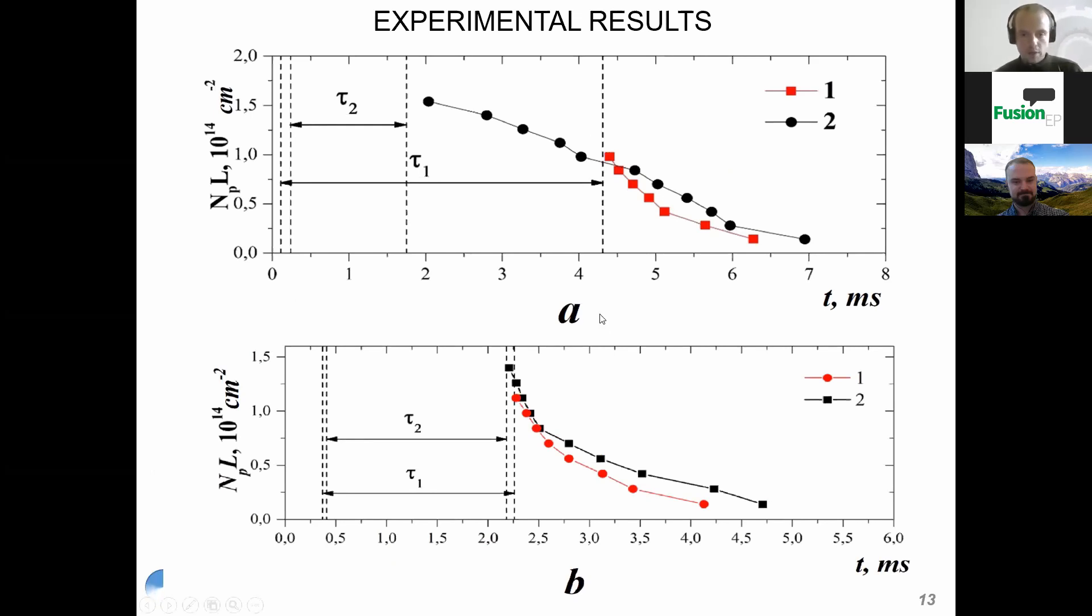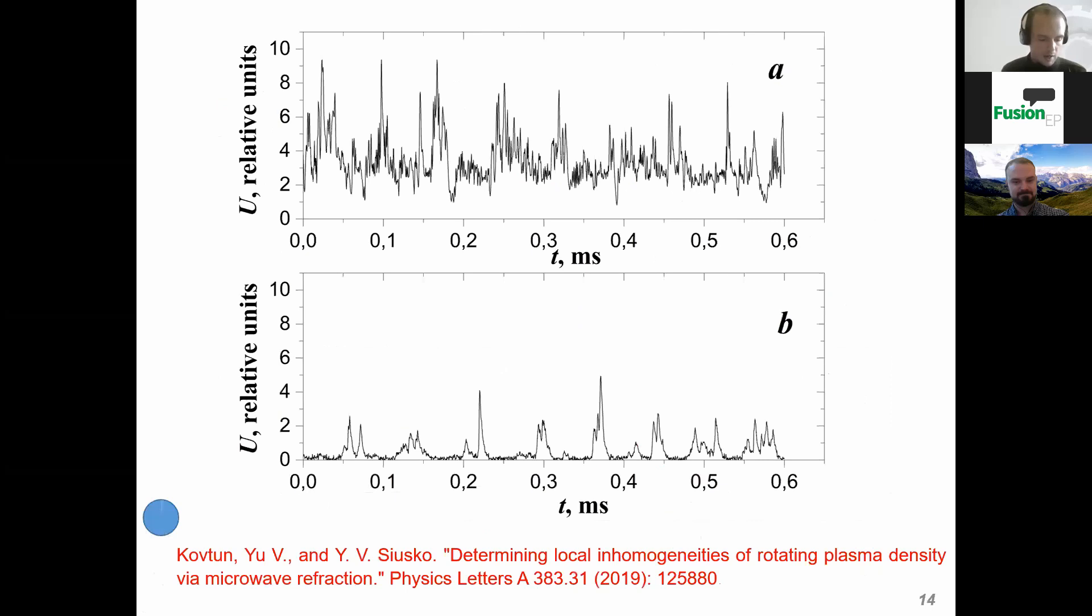The interferometry at 120 degrees measures NPL at a density slightly higher than the critical density. This is the reflected signal from the plasma at normal and inclined probing. The amplitude changes with time from minimum to maximum. It was assumed that it happens due to the inhomogeneities of the cylindrical rotating plasma.